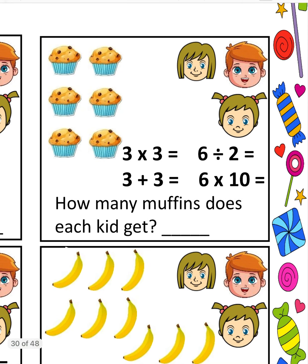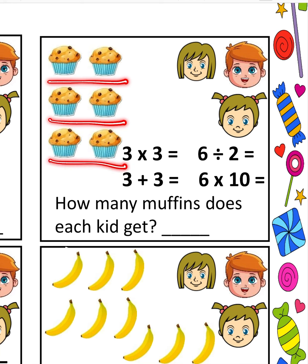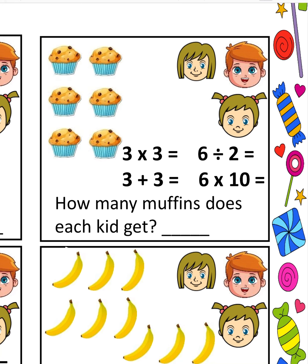Let us take the next example. You can see here how many muffins are there — 1, 2, 3, 4, 5, 6. So 6 muffins are there and 3 children are there. We have to divide these 6 muffins among 3 children. If we divide into pairs — first pair, second pair, third pair — the first pair goes to this kid, the next pair goes to that kid, and the rest 2 muffins go to the third kid. Division means just breaking a number into equal halves.